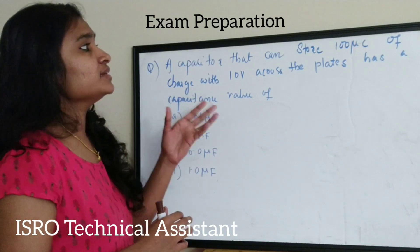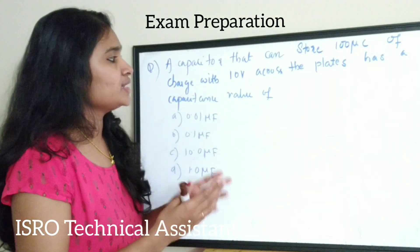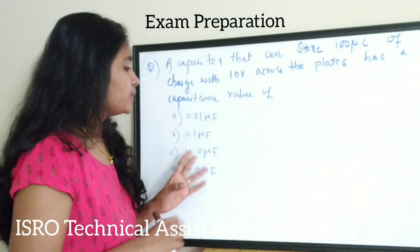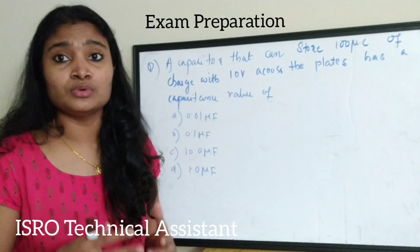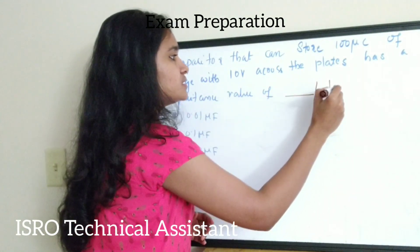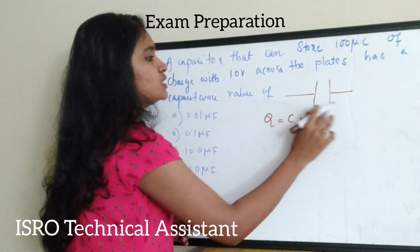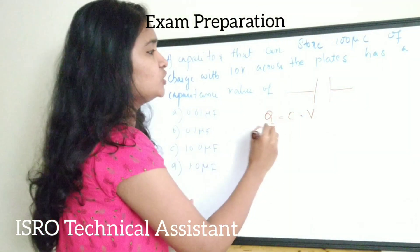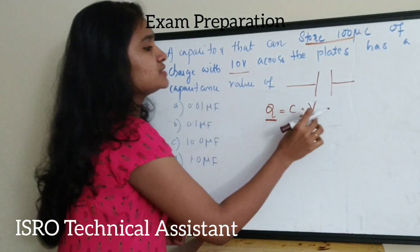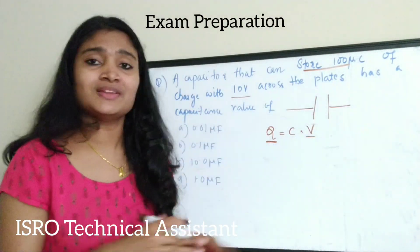Today we will see previous year questions from the 2017 technician exam. The first question: a capacitor that can store 100 micro coulombs of charge with 10 volts across its plates has a capacitance value of what? The options are: 0.01 micro farad, 0.1 micro farad, 10 micro farad, and 1 micro farad. This is a very basic question. We need the equation: charge stored Q equals capacitance C times voltage V.